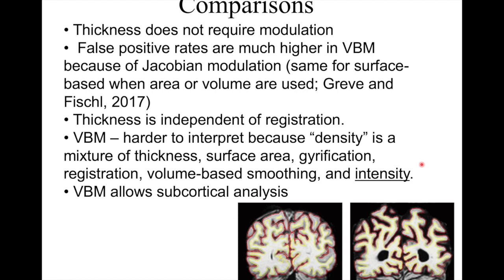Another problem is gyrification. The older subject has a lot of space between gyri — the sulcal space has expanded dramatically. If you draw a circle around a point and ask how much gray matter is inside, you'd get one number for the young subject, but the older subject would show much less gray matter in that circle because the sulcal space has opened up — even though the thickness in that area might not have changed at all. So part of what you're measuring with VBM is gyrification. This is a real weakness of VBM: the interpretability — it's telling you something, and that something might be interesting, but it becomes very hard to interpret.